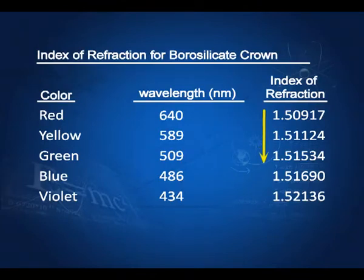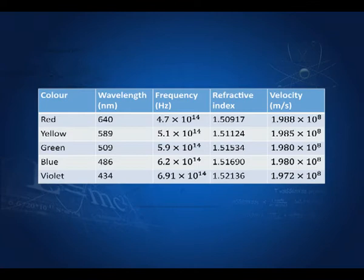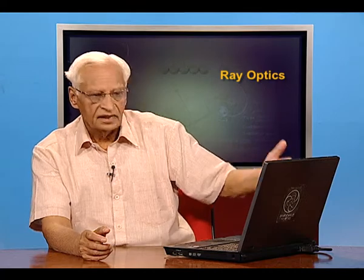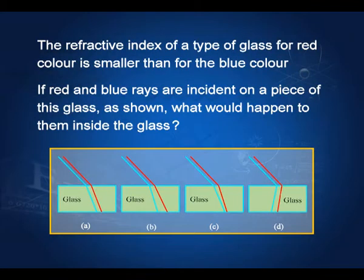You can see that the index of refraction increases as we go from red to violet. We also have frequency and the velocity of light for each color. As the refractive index increases, the velocity of light decreases from red to violet. The effect of this is that when two rays — say one blue and one red — enter a medium, they do not travel parallel because they bend to different extents.